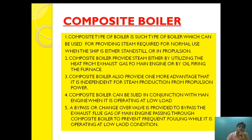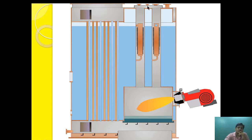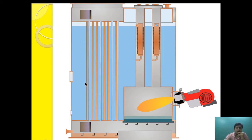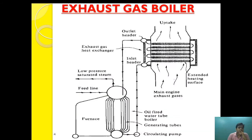As you can see in this diagram, this is the Aalborg composite-type boiler. This is the oil-fired furnace, which heats the water around it when the composite exhaust side is not in use. The composite exhaust section uses exhaust gas for steam generation. The two parts are separate from each other, but the water is common, so overall heat transfer and steam generation is composite.